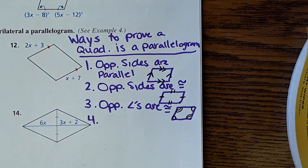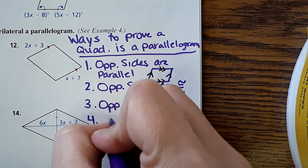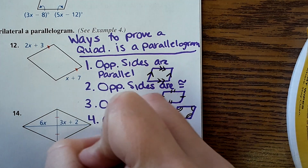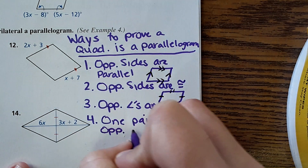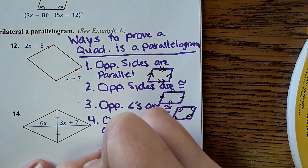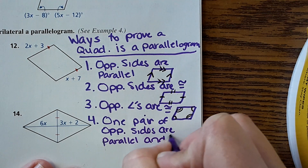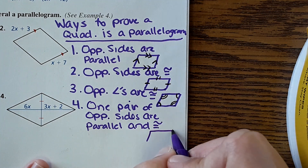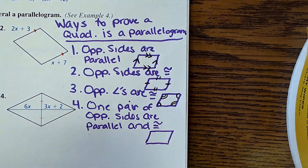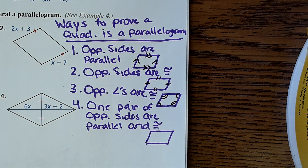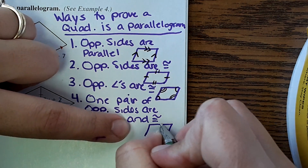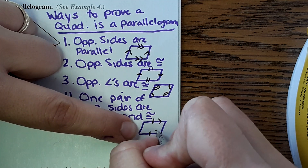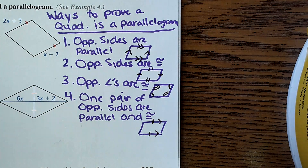Number four is a new one we didn't see yesterday: one pair of opposite sides are both parallel and congruent. So if we're told that this side is the same length as this side and that side is also parallel to the bottom, then we have a parallelogram — and all the other conditions would have to be met as well.